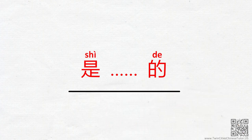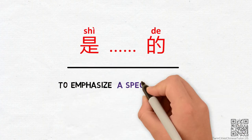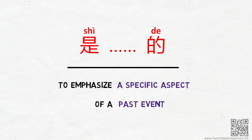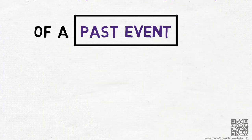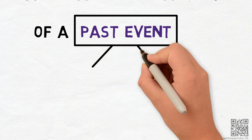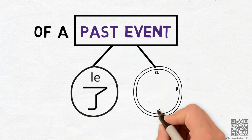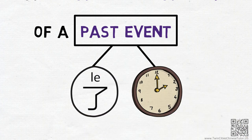Now, what makes the 是的 pattern more interesting — and often more confusing — is when it is used to emphasize a specific aspect of a past event. This usage is quite different from what beginner students are used to seeing. Normally, when we want to talk about a past event in Chinese, we will often use the marker 了 in combination with mentioning the time.